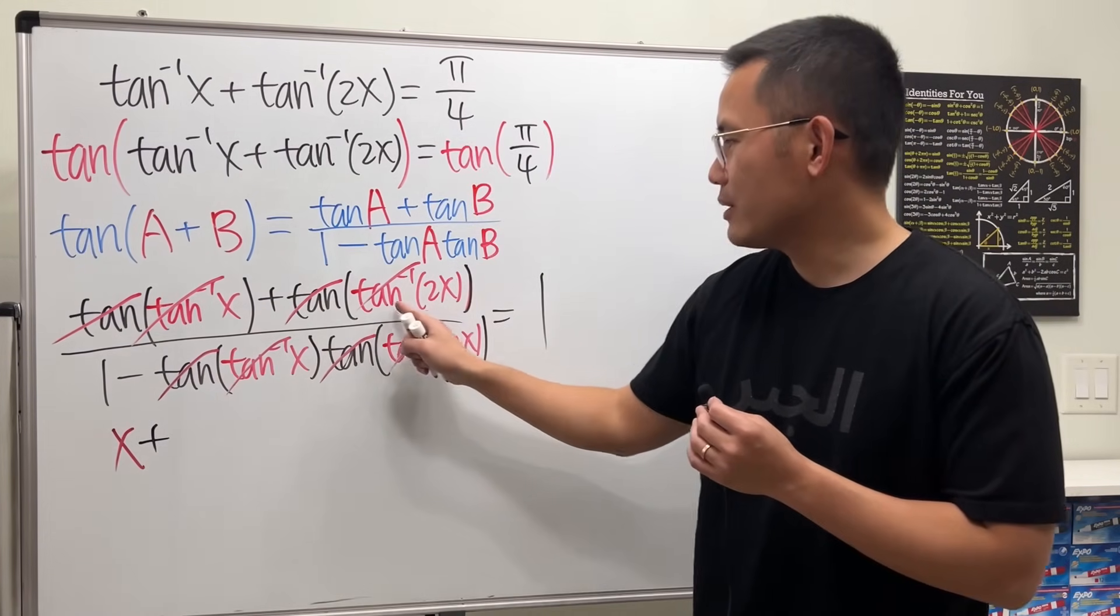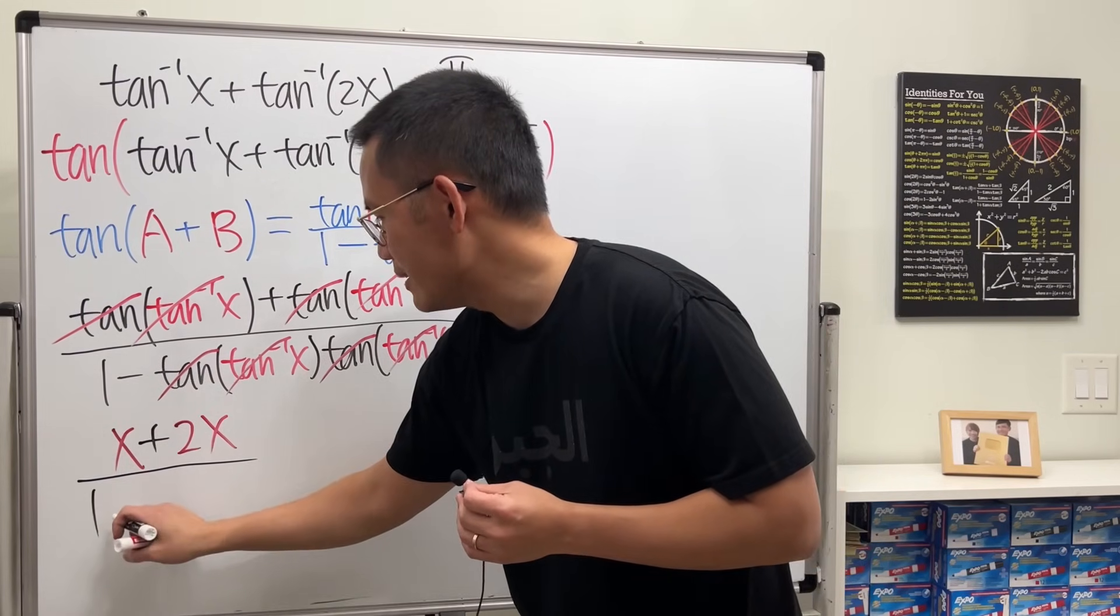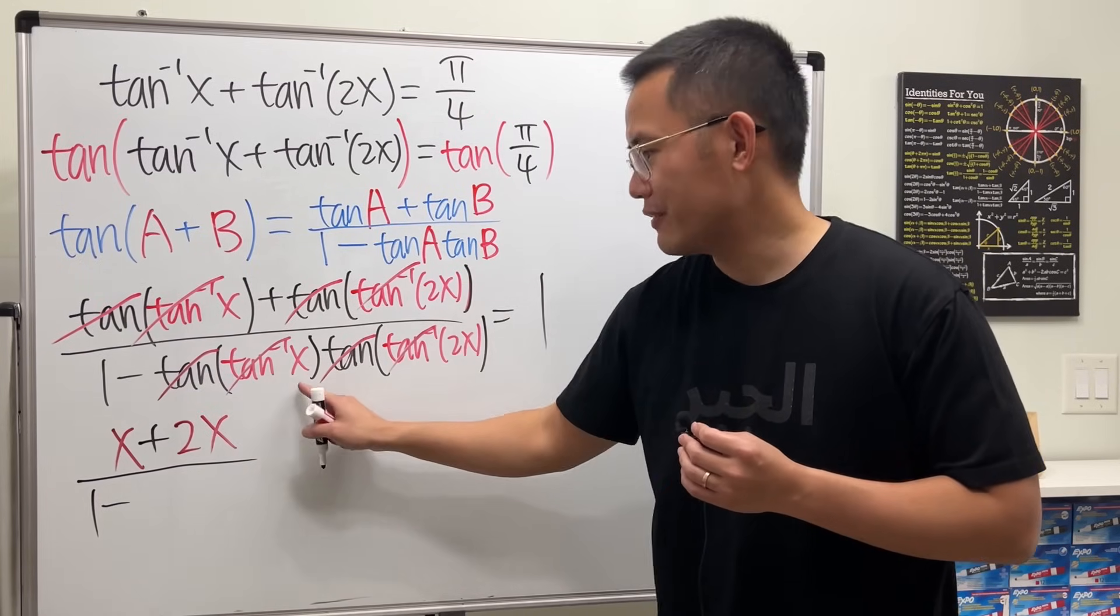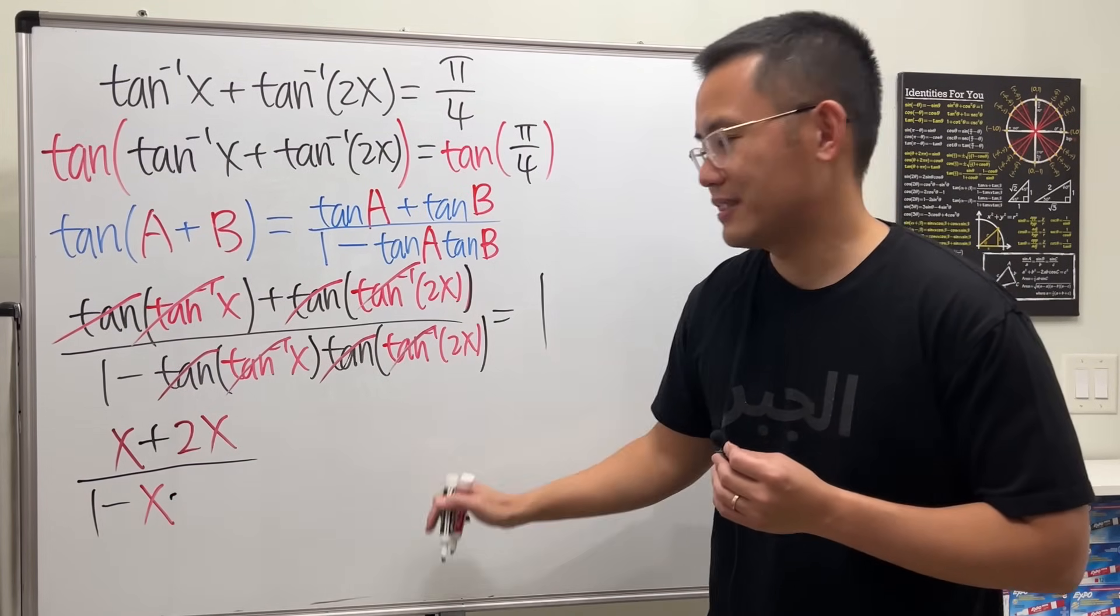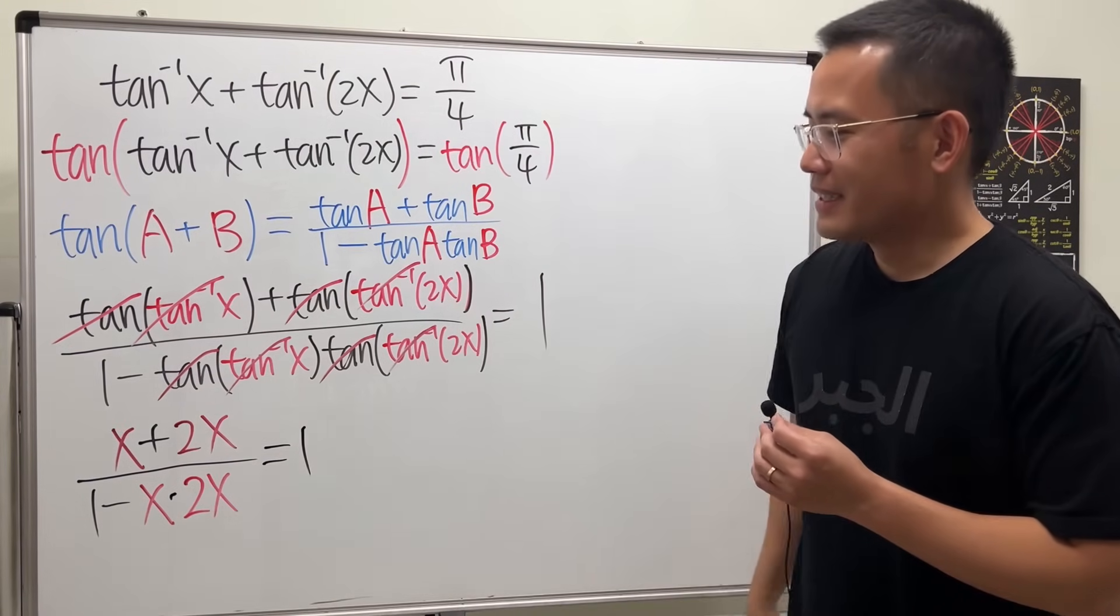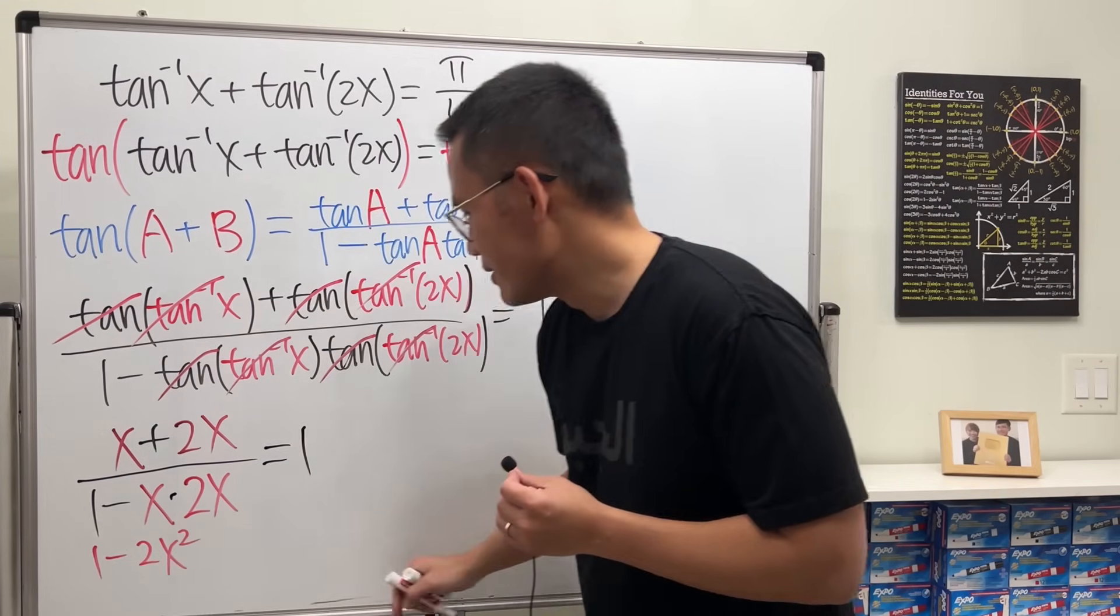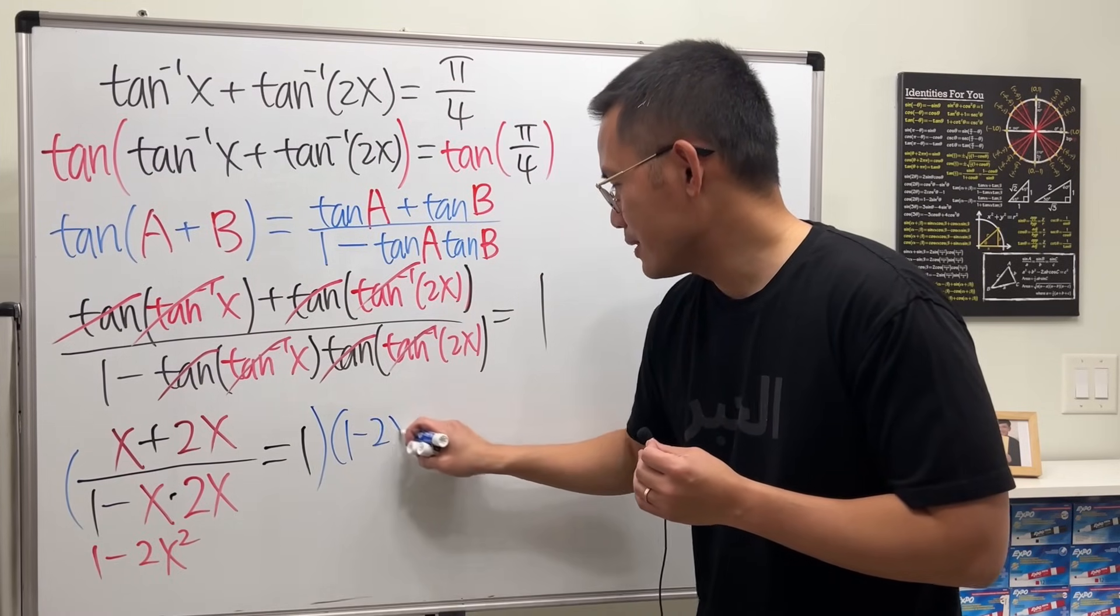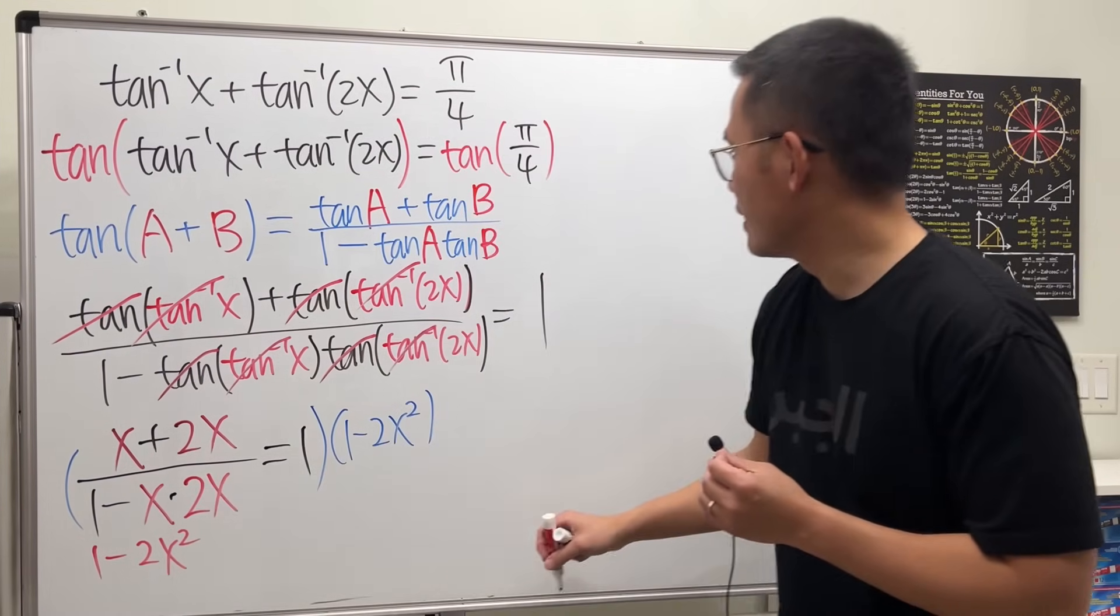And the right side is equal to 1. And now here comes the best part. Original tangent, inverse tangent cancel. This is true for all x. There's nothing too much we have to worry about because the domain for inverse tangent is from negative infinity to plus infinity. So here we have x, plus here we have 2x, over this is just 1, and that's a minus. Here we have this and that cancel, we have the x times 2x, and that's equal to 1.